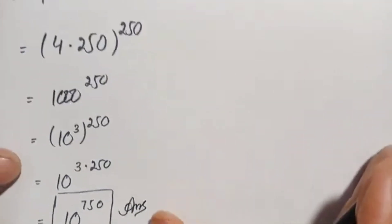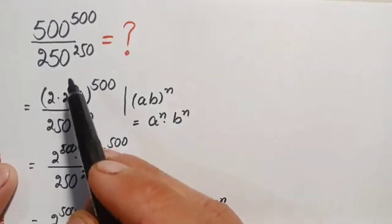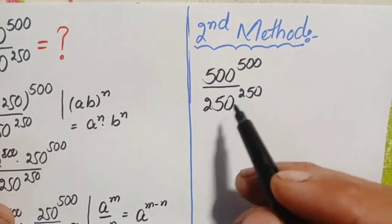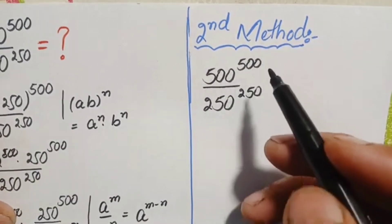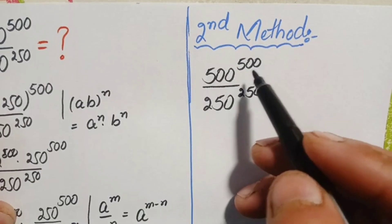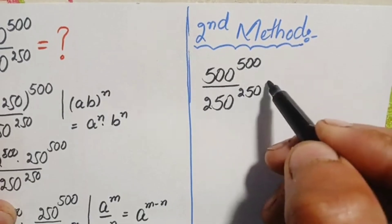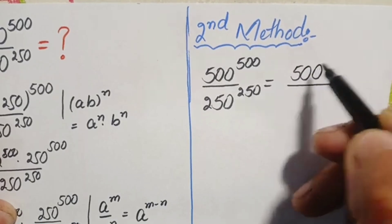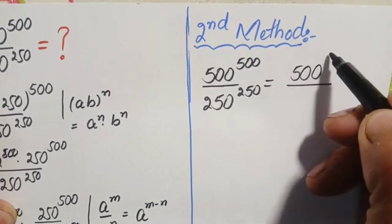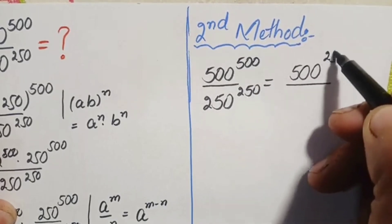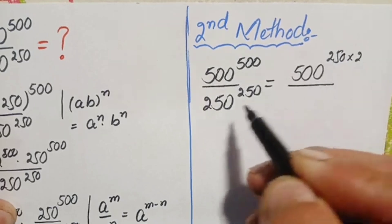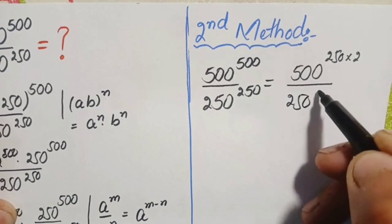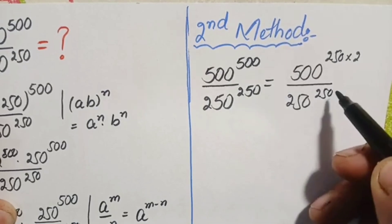Now we will solve the same problem using the second method. In the second method, we factorize 500 differently. We write the numerator as 500 raised to the power 500, where 500 can be expressed as 250 times 2. The denominator remains 250 raised to power 250.